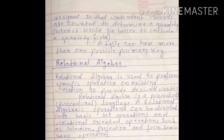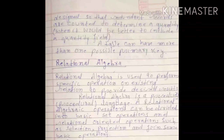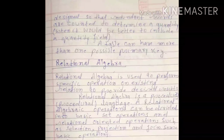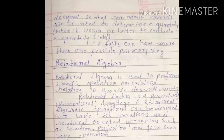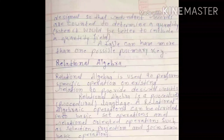Relational algebra is used to perform specific operations on existing relations to provide desired results. Relational algebra is a procedural language. Relational algebraic operations can be divided into basic set operations and relational-oriented operations such as selection, projection, and join.